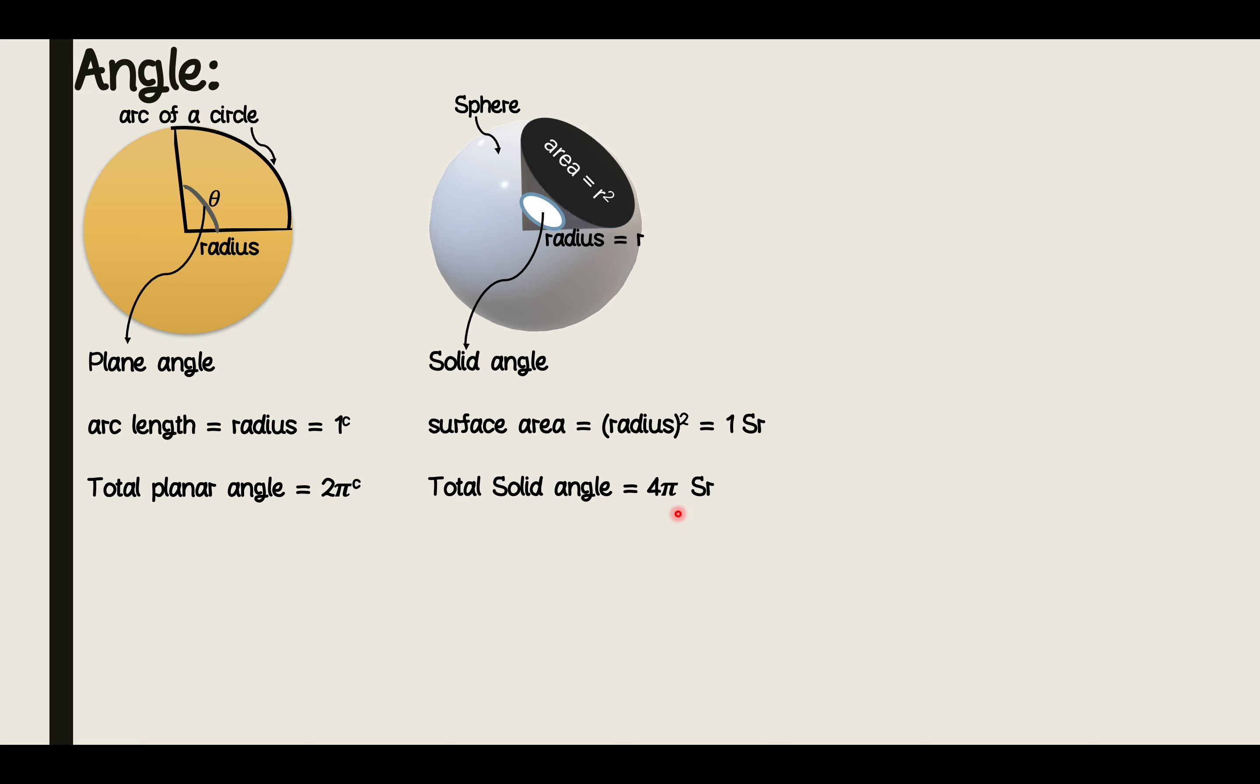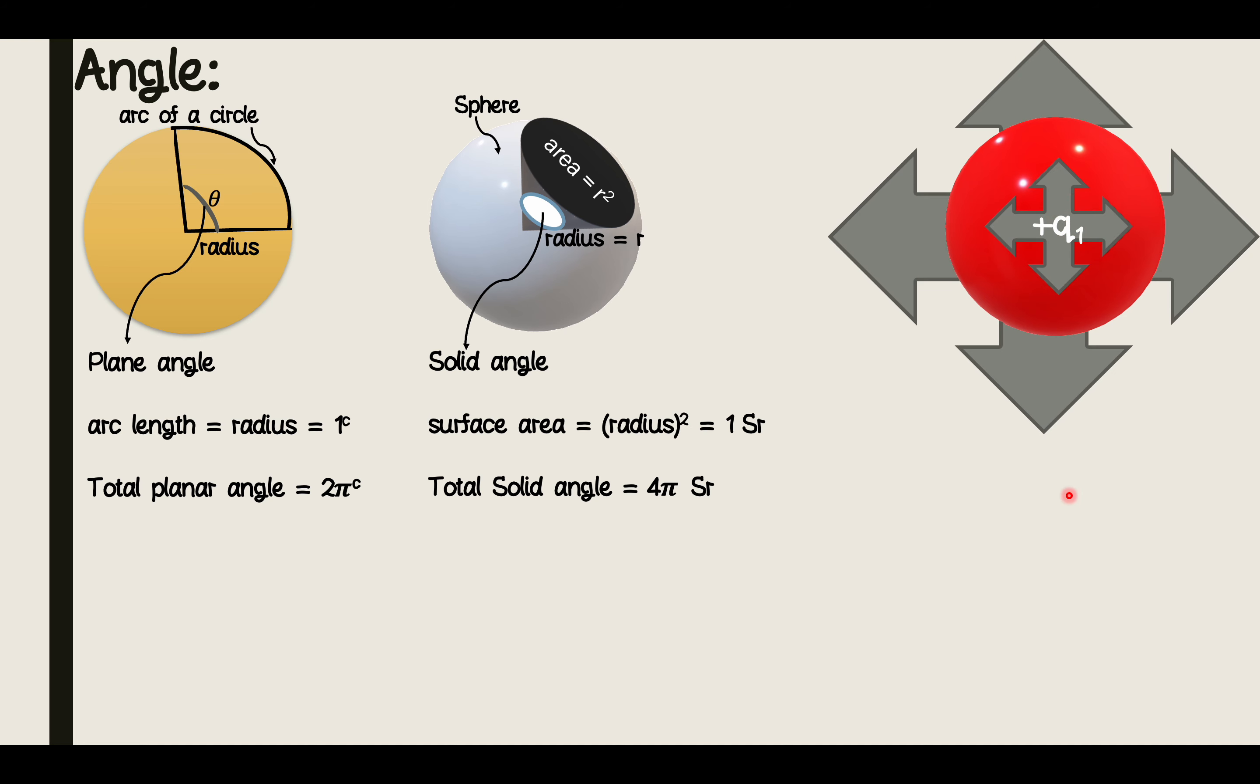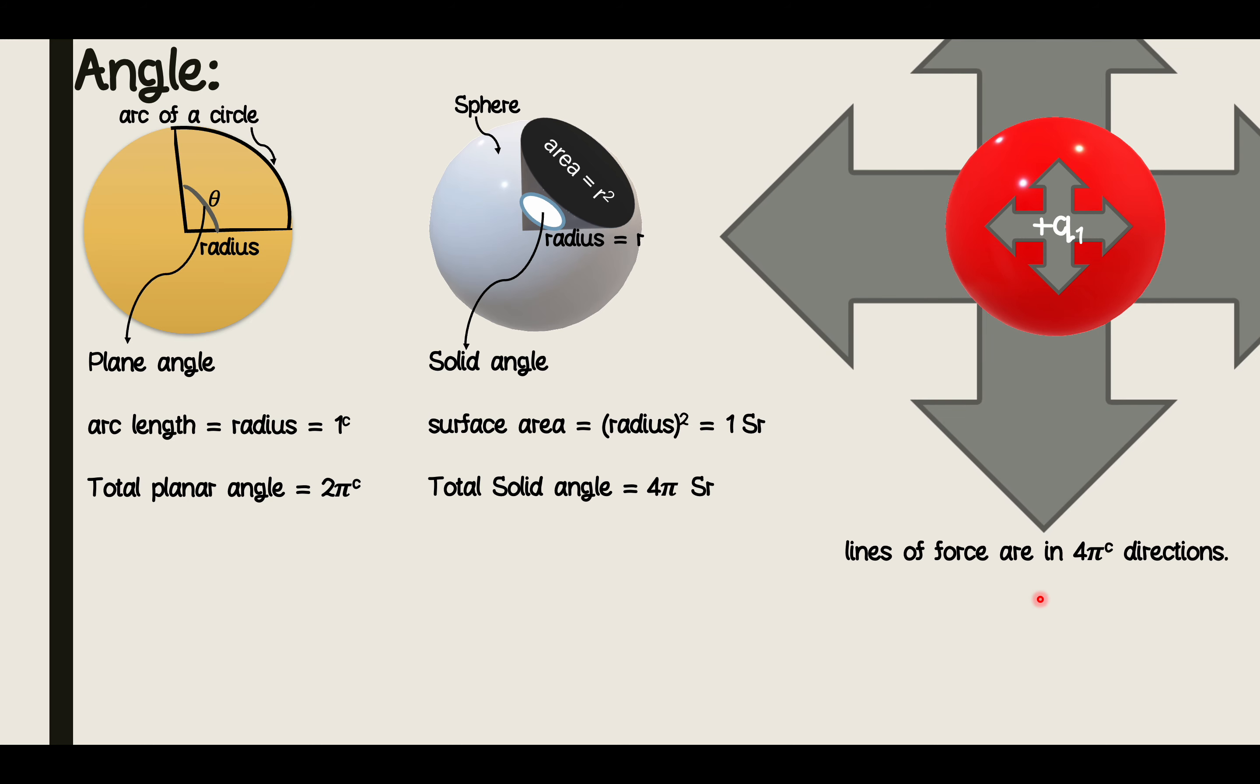But it is not explaining why we have a 4pi term in the formula. And to understand that we take this exaggerated diagram of point charge q1. Here this red 3D sphere is analogous to our point charge q1. Q1 is emitting these lines of force in all the possible direction in the three dimensional space. And in terms of mathematics we can say that it is emitting these lines of force in 4pi directions, 4pi steradian directions. But Coulomb's law is giving us the force between the charges along line joining them, which is just one line essentially. Originally the point charge is emitting the lines of force in 4pi steradian directions. And to have the force for one line we must divide the formula by 4pi.